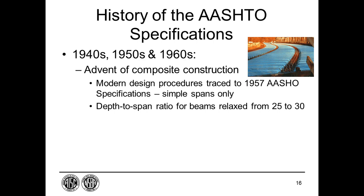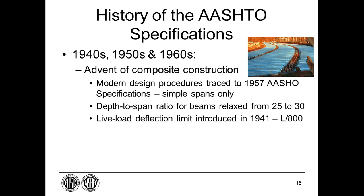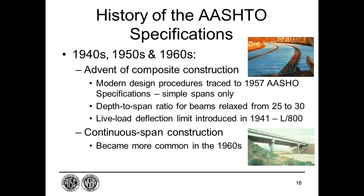In the early 1950s, it became evident that wide flange beams with span-to-depth ratios greater than 25 could be economical with the increasing use of multiple stringers and composite decks. As a result, the recommended span-to-depth ratio was relaxed to 30 for the steel section and left at 25 for the composite section. In the third edition AASHO specification dated 1941, a live load deflection limit was introduced for the first time — bridges were limited to a maximum live load deflection of span length divided by 800. The use of continuous spans was not common until the 1960s when computer programs made analysis of these structures more practical.